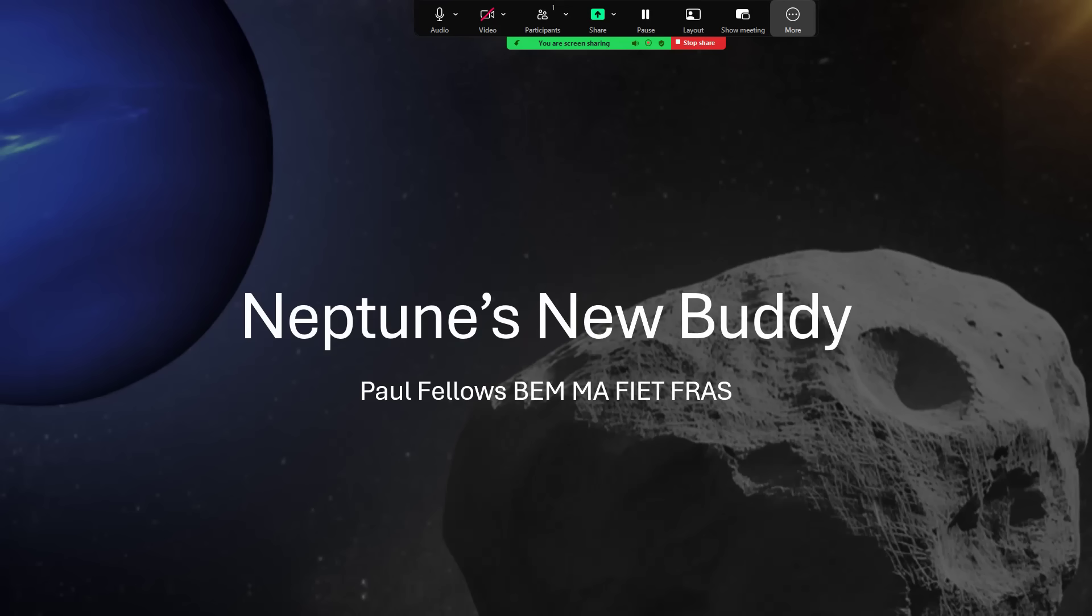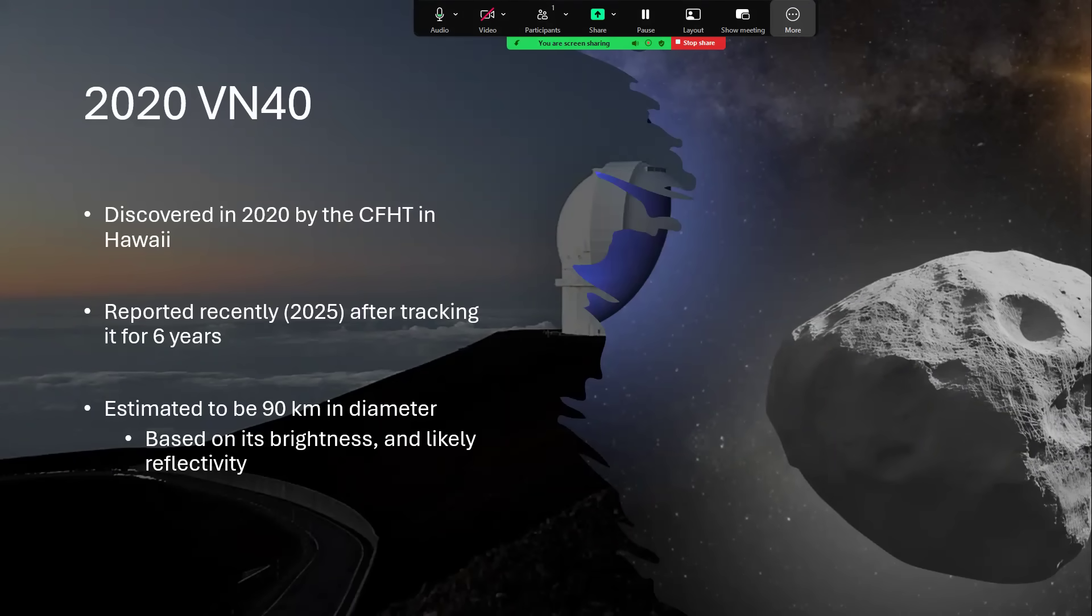Neptune's new buddy. This is a story that's hit the news recently because of another very interesting paper that's been published, and it's the discovery of an object called 2020 VN40. I'm afraid it doesn't have a sensible name yet.